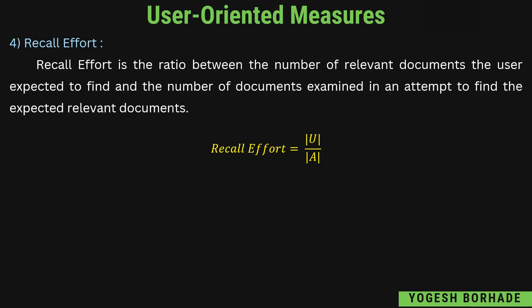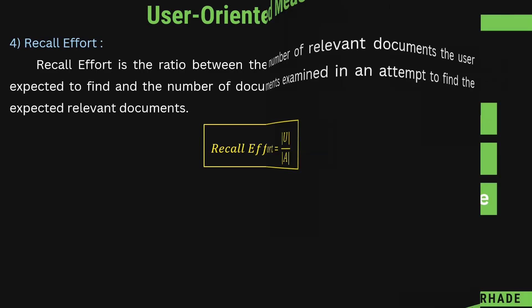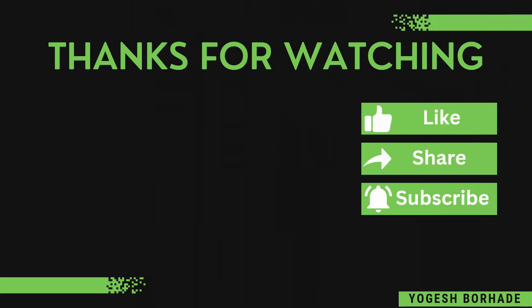यह 4 measures user-related measures में आते हैं — हो सकता है 5 marks के लिए पूछा जाए। उसमें आप user-oriented measures हम क्यों use करते हैं, उन्हें propose क्यों किया गया, यह लिख सकते हैं। Formula से भी definitions बना सकते हो अगर ऊपर की definitions थोड़ी hard लग रही हैं। तो यहाँ तक चार lectures में हमने Unit 3 का first main part complete कर लिया है। Next 2-3 videos में visualization का part cover करूंगा। अगर video अच्छी लगी तो like करें, share करें, और channel subscribe करना न भूलें। Thanks for watching, see you in the next video।